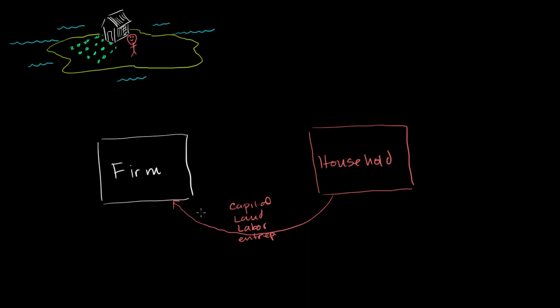And in return, the firm will essentially pay rents for these factors of production. So for the building rent, the firm is going to pay him $1,000 per year. For the land rent, he's also going to get paid another $1,000.